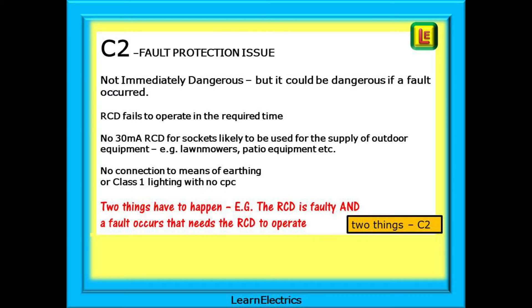C2 codes generally relate to fault protection issues. If a fault occurs, things are either not in place or not working as they should be in order to eliminate the fault before it can cause an electric shock. We say it is not immediately dangerous, but it could be dangerous if a fault occurred. Such as an RCD that fails to operate in the required time, no 30mA RCD for socket outlets likely to be used for the supply of outdoor equipment, perhaps no connection to the means of earthing, or class 1 lighting with no CPC. Think of two things that need to happen to receive an electric shock — first the RCD is faulty, it doesn't work, and then second an earth fault occurs that needs the RCD to operate, and of course it doesn't. Two things: C2.